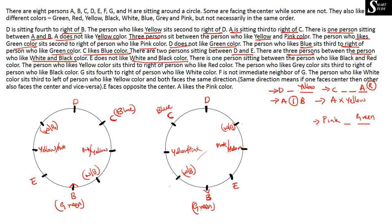Next: there is one person sitting between the person who likes black and red, so between black and red there must be a gap of one person. If black is at a certain position, counting 1 person, red can be at one spot but not another due to existing placements. There are two possibilities in each case — between black and red there must be a gap of only one person.